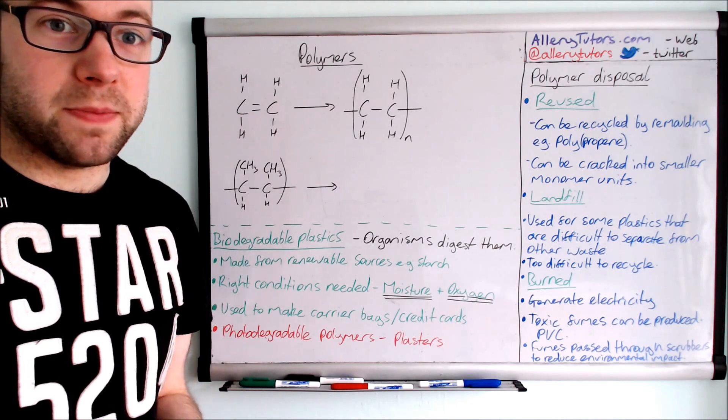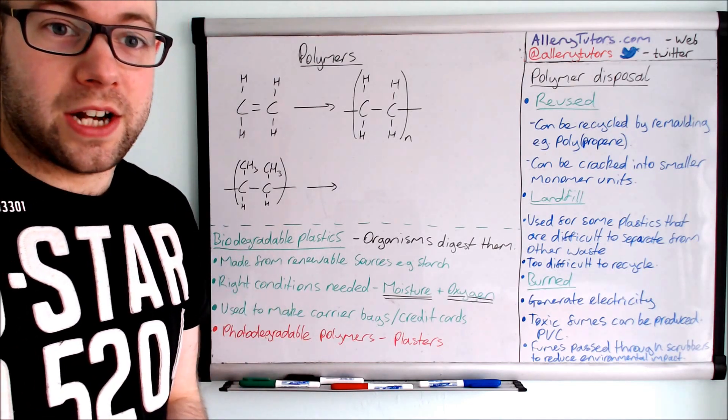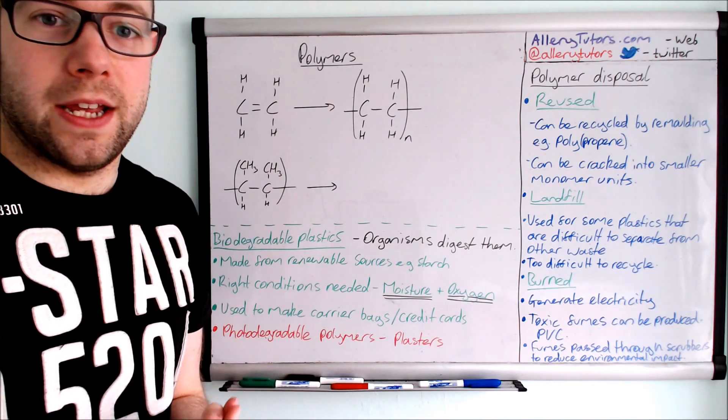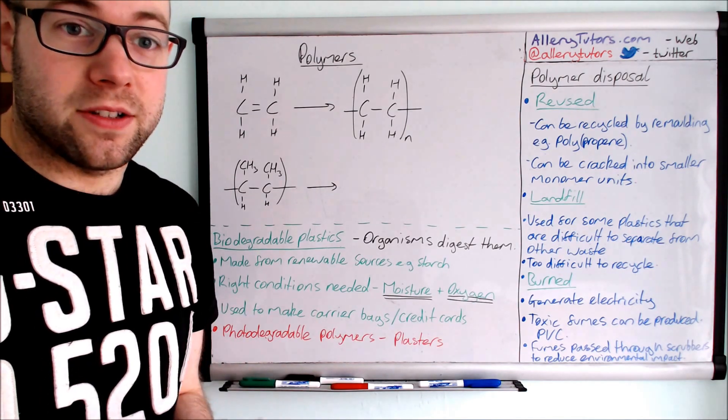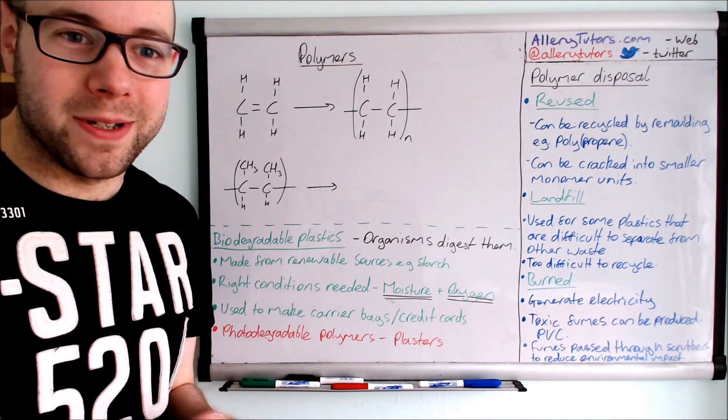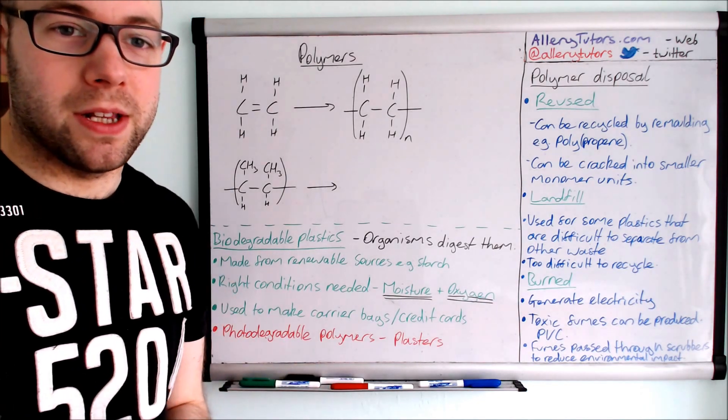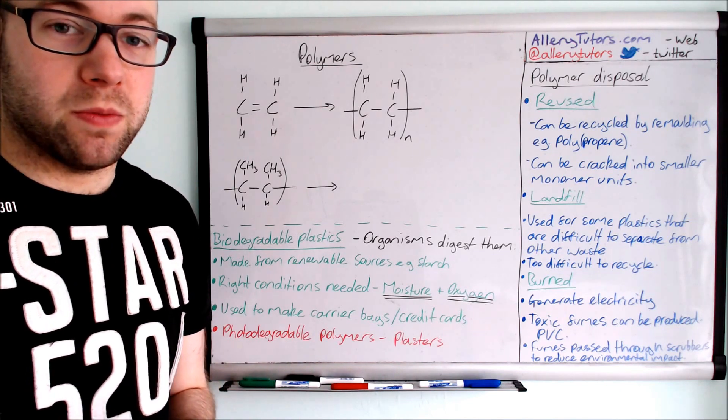But you need to check your specifications to make sure that the actual polymers section does actually exist in the AS syllabus. So what we're going to look at is what a polymer is, how we can link monomers together to form polymers, and we're also going to look at the green chemistry side as well, looking at how we can dispose of these properly and why we dispose of them in certain ways.